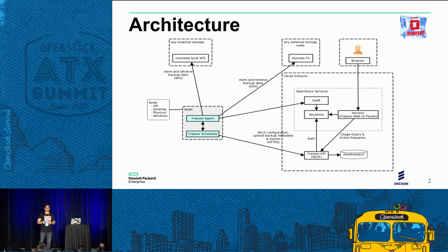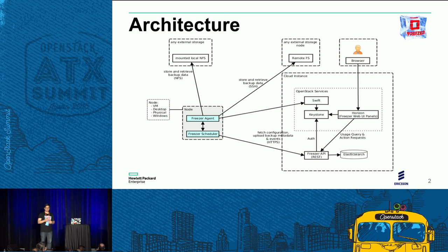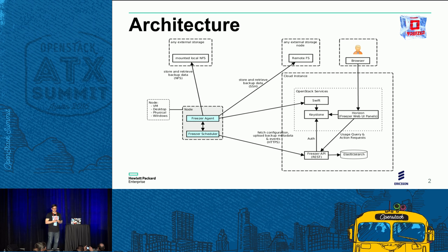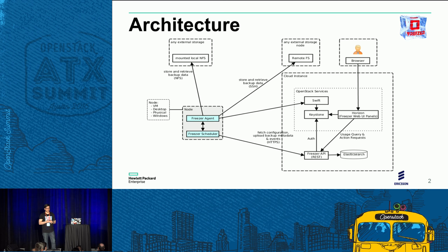There are the APIs, which are the central point for storing the metadata of any action being executed by all the other components. The API is also the component queried by the web interface integrated in Horizon to display metrics and information.